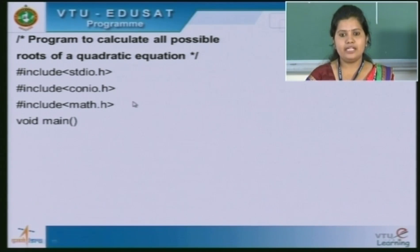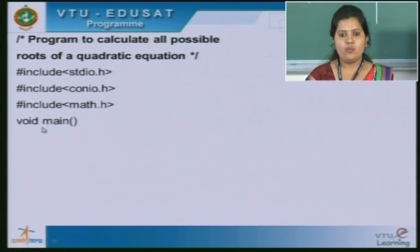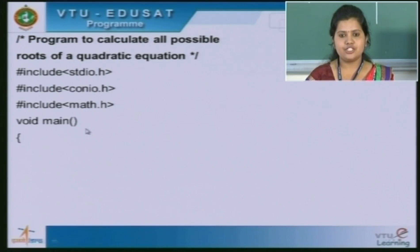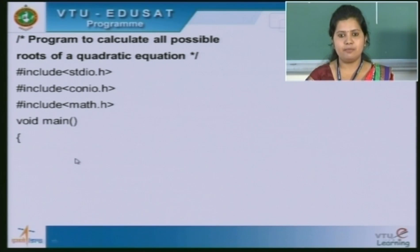The next part is the main function. Main is a function and it is the starting point of execution. Void is a keyword which indicates that it has no return type. After the main function, we have to open the flower bracket. Inside this, we have to write some set of statements. Those statements are called executable statements.